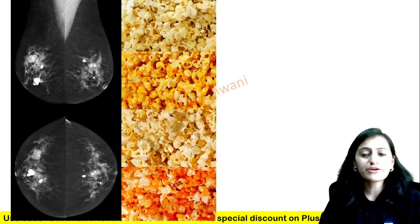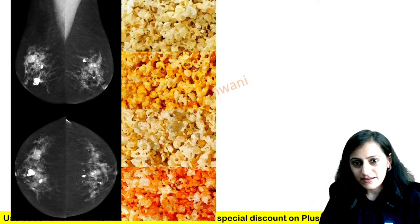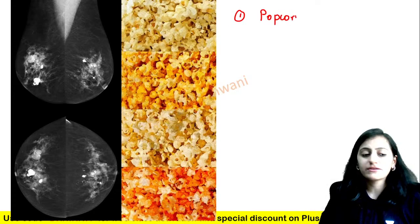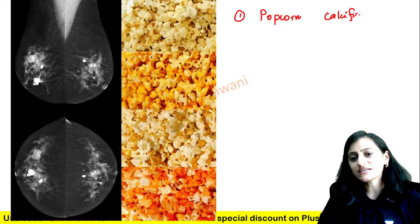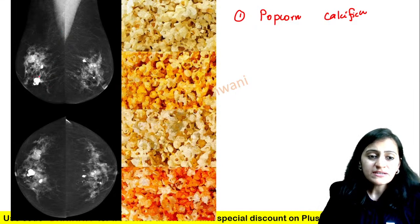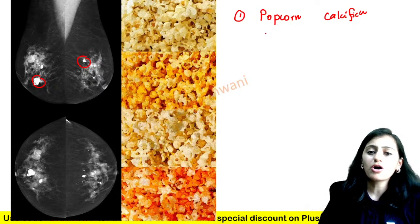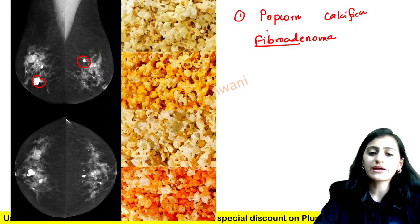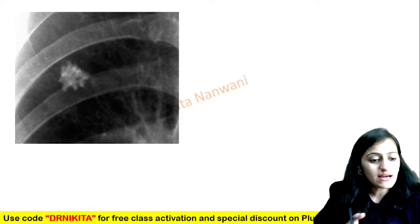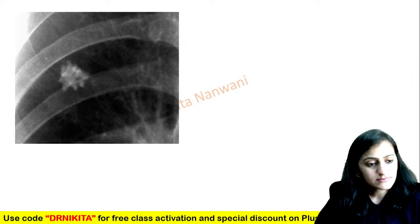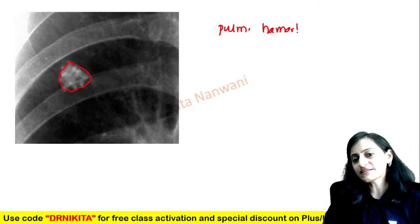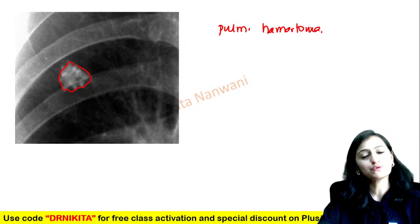Starting with food signs — the first one is the popcorn sign. This is a popcorn calcification seen on mammography — chunky calcification like popcorn. That is fibroadenoma. Popcorn calcification in the lung is seen with pulmonary hamartoma — a recent FMGE question.